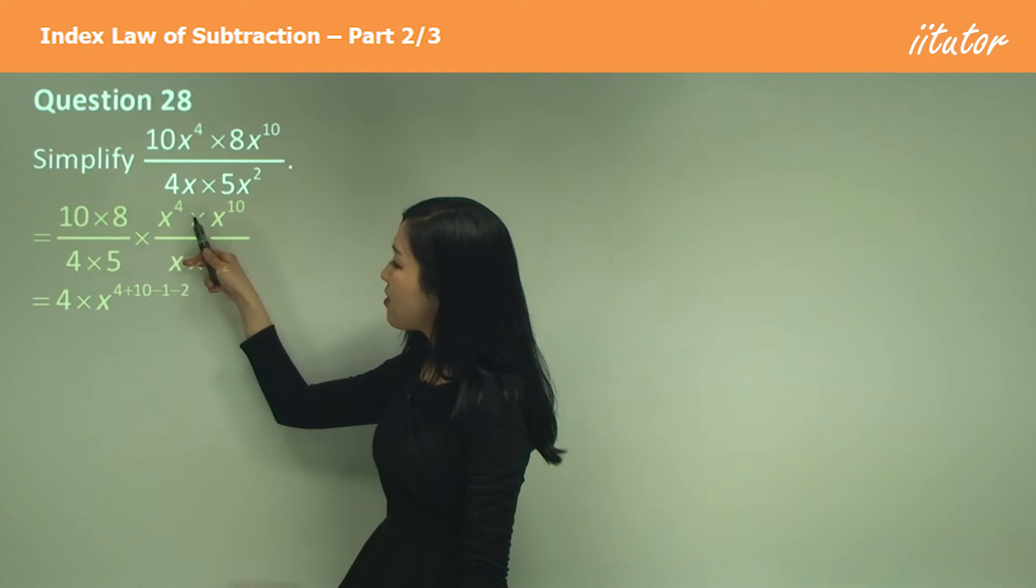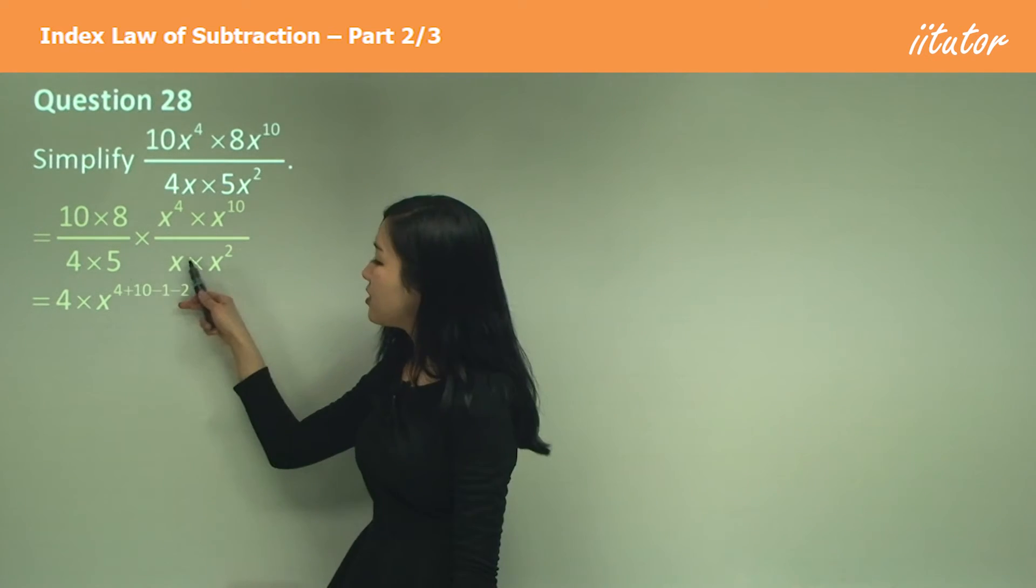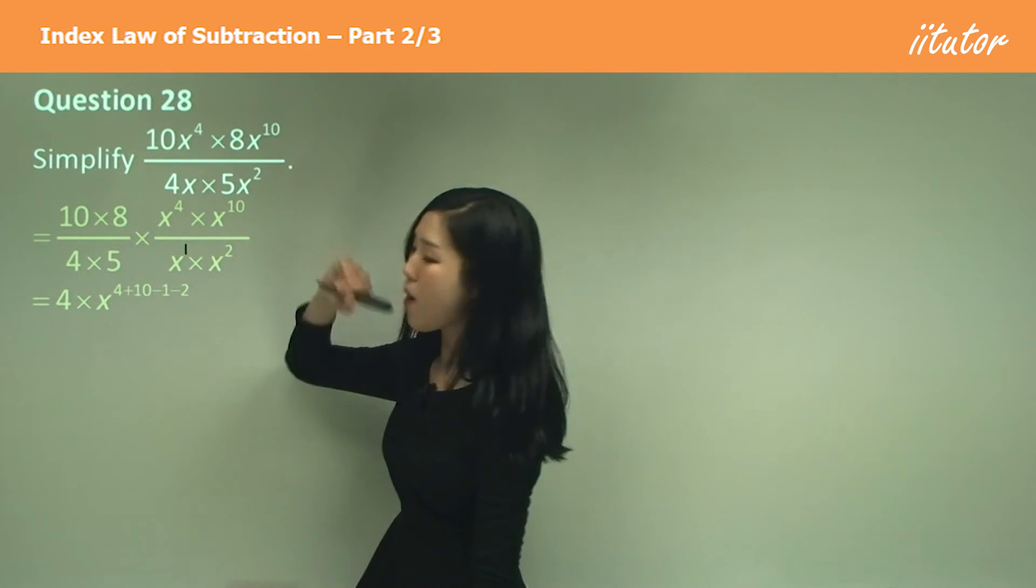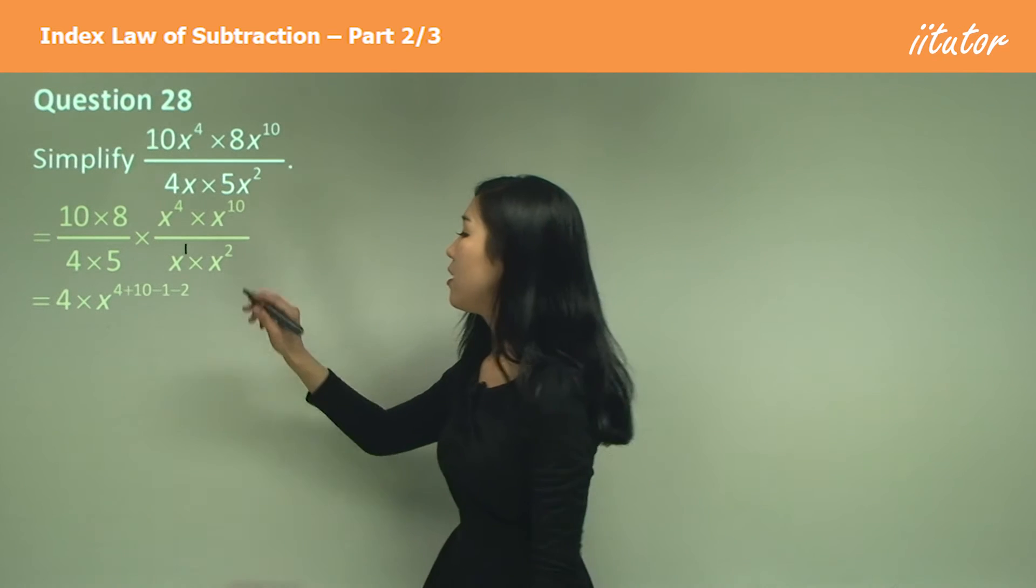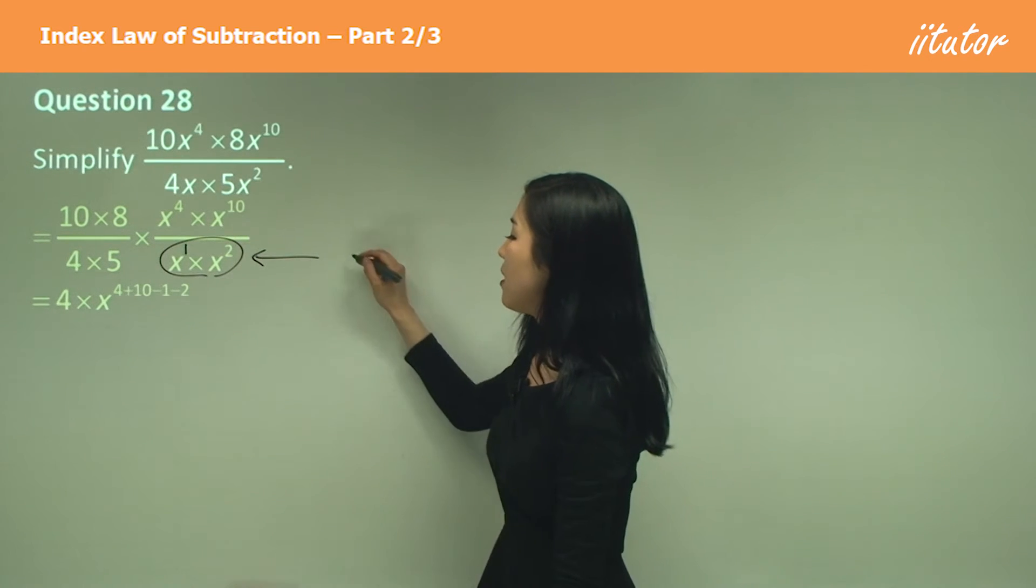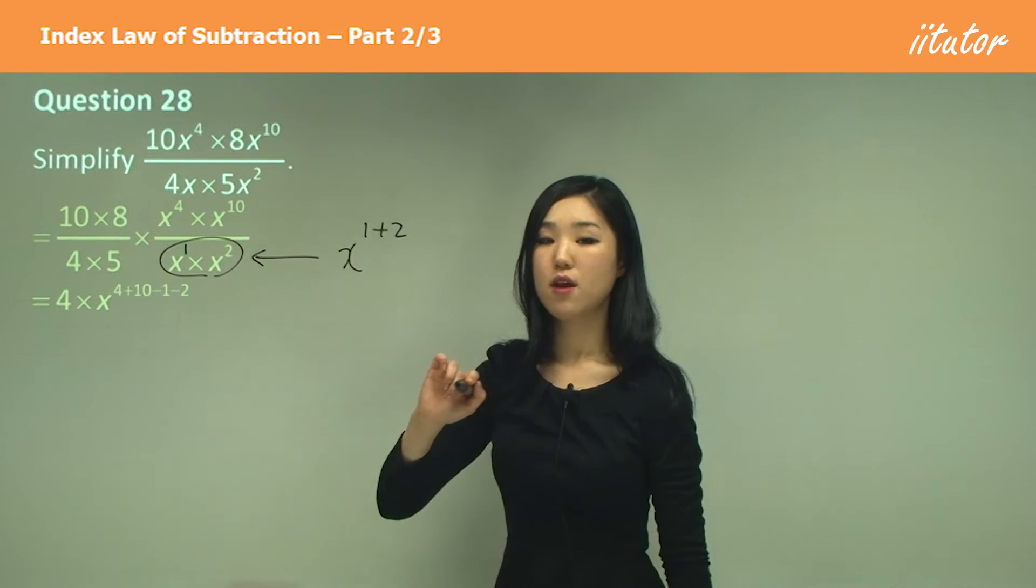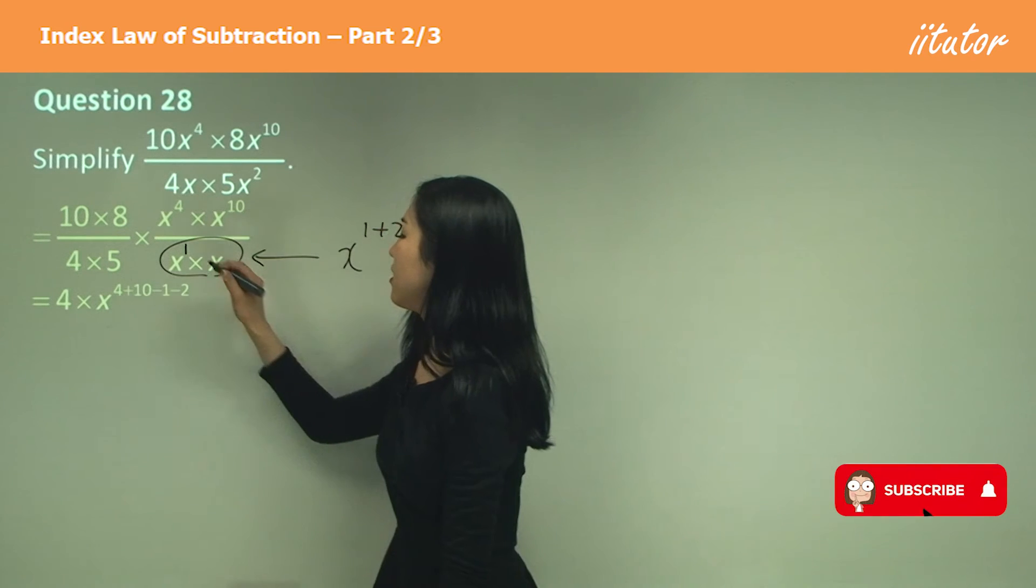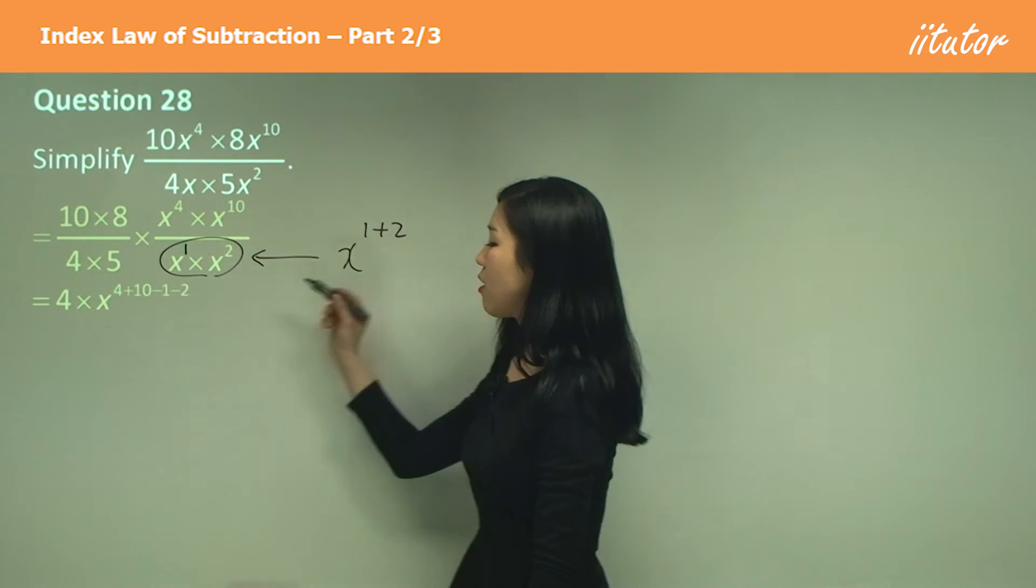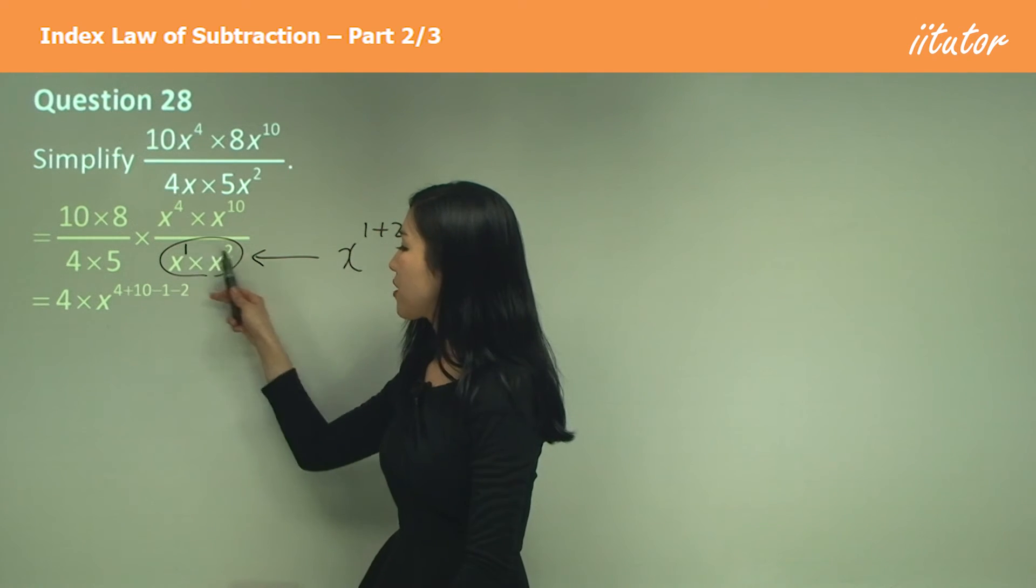We're multiplying these, so we add the indices, 4 plus 10. Now, if x has nothing at the top, it just means 1. It's x to the power of 1. This part will be x to the power of 1 plus 2. But because we're dividing, I must subtract the 1 plus 2. So I must go minus 1 minus 2. I have to subtract both of these.